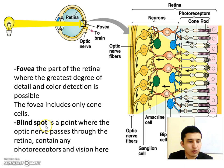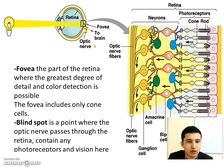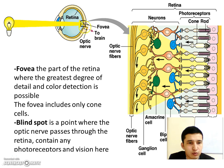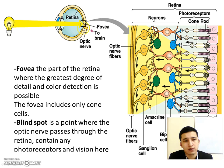The blind spot is the point where the optic nerve passes through the retina. It does not contain any photoreceptors, so there is no vision here. If light goes to the blind spot, you can't see anything because there are no photoreceptors at that location.